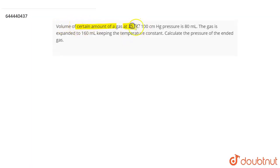Volume of a certain amount of a gas at 25 degrees Celsius, 100 centimeter Hg pressure is 80 ml. The gas is expanded to 160 ml keeping the temperature constant. You have to calculate the pressure of expanded gas.